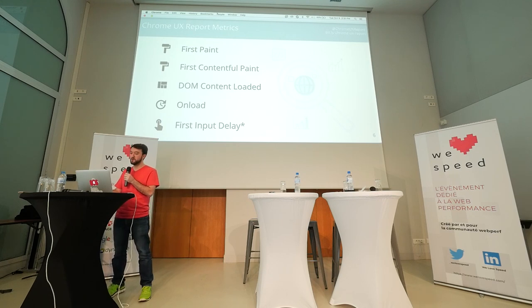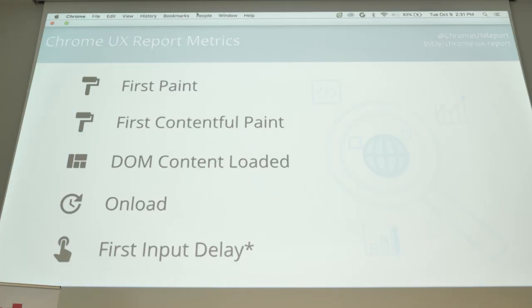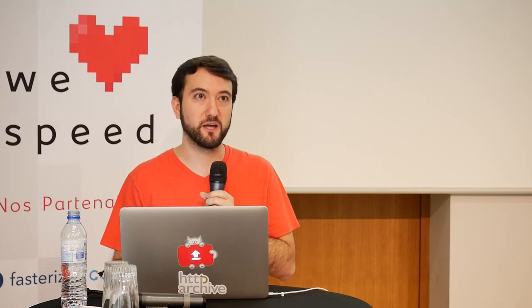The metrics collected by the tool — there are only five of them right now: FirstPaint, FirstContentfulPaint, DOMContentLoaded, OnLoad, and FirstInputDelay. The first four metrics were originally released last year; the dataset is about one year old. These are metrics that measure the page loading experience. Metrics like DOMContentLoaded and OnLoad might not actually influence the user's experience — these are metrics that have been around for a very long time. But this report is focused on the user experience.